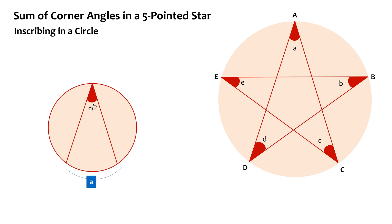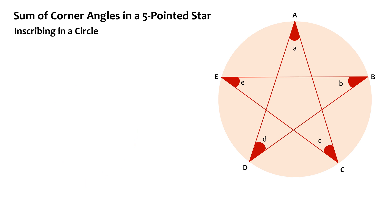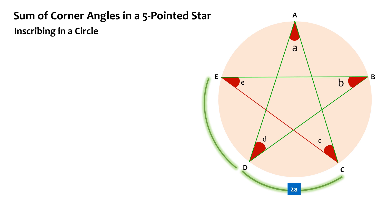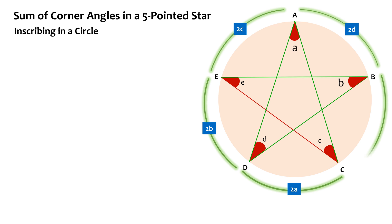This means the measurement of an arc is equal to double the measurement of the inscribed angle subtended by it. Here, this arc subtends angle A, therefore it will be equal to 2A. Similarly, this arc subtends angle B, so it will be equal to 2B. With the same logic, this arc will be equal to 2C, this arc will be equal to 2D, and this arc will be equal to 2E. Now we know that the circle has 360 degrees all the way around the center, therefore 2A + 2B + 2C + 2D + 2E = 360°.